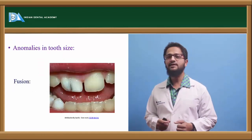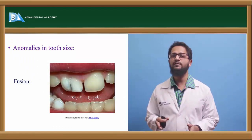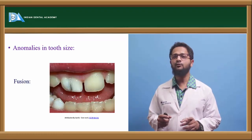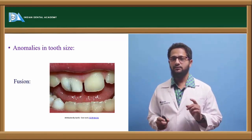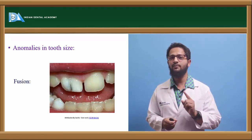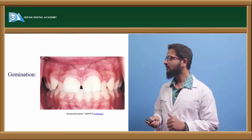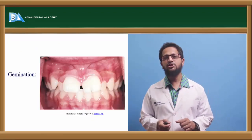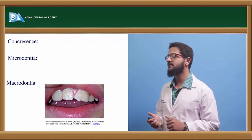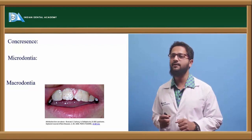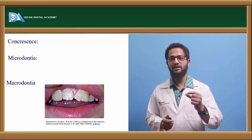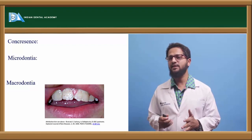Next, anomalies in tooth size. Fusion refers to the complete union of two separate teeth, involving the enamel and dentine, resulting in one larger tooth. Gemination refers to partial development of two different teeth from a single tooth bud. Concrescence is the union of the root portions of two separate teeth. Additionally, microdontia is a decrease in tooth size, and macrodontia is an increase in tooth size.